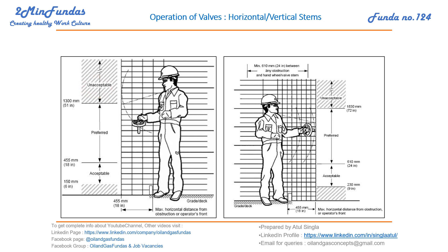There are various elevations which are acceptable and some which are not. If an operator is standing and trying to operate a valve with a vertical stem, from 455mm up to 1300mm is the preferred elevation of the stem. The operator can stand and operate this valve very easily within this range — this is the preferred one.